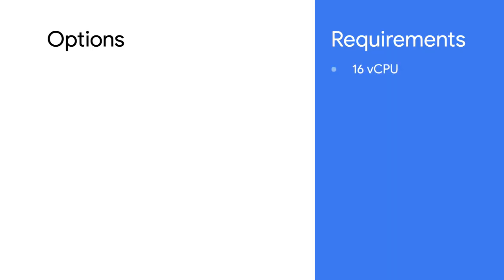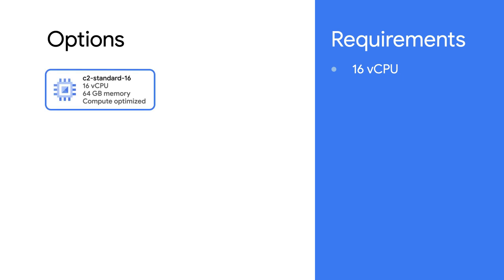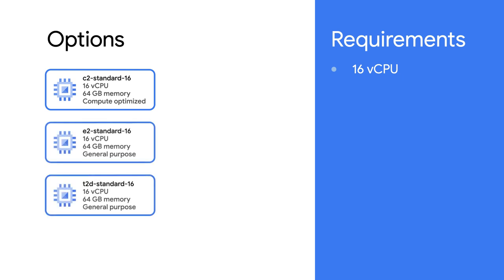Now let's choose a VM. Say my only requirement is a virtual machine with 16 virtual CPUs. The workload-optimized C2 Standard 16 will give the CPU I want with a standard CPU-to-memory ratio. For general purpose machines, an E2 Standard 16 has similar specifications — 16 virtual CPUs and 64 gigs of memory — and is priced a bit lower than the workload-optimized C2, making it a possible cost-saving choice.